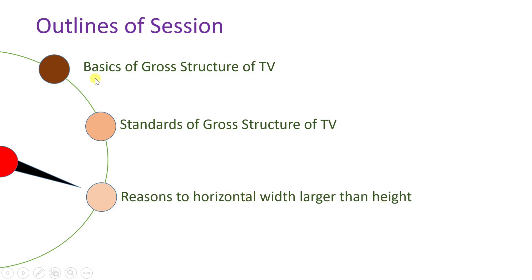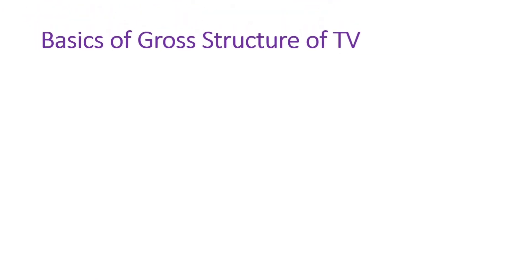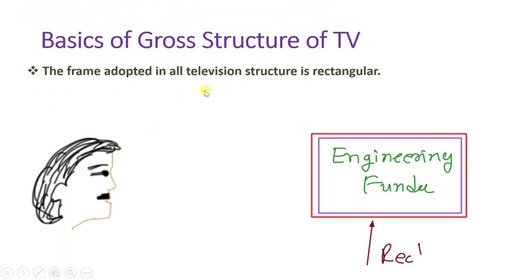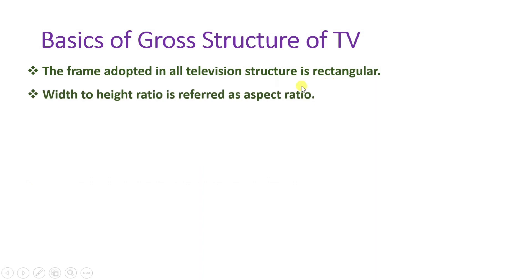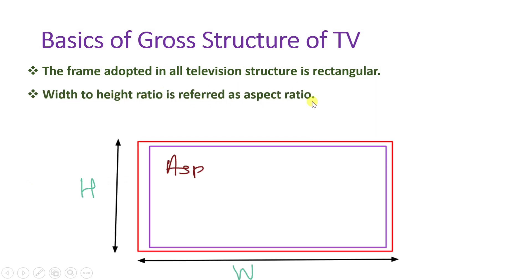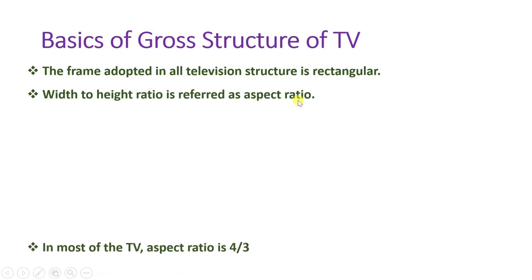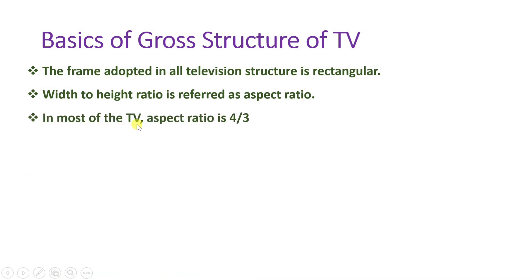Let us begin this session with the first agenda, that is basics of gross structure of television. When you see any television, you will find its structure is rectangular in shape. Width to height ratio is referred to as aspect ratio. So all the televisions you will find are rectangular in shape, and in most televisions, aspect ratio is 4 by 3.